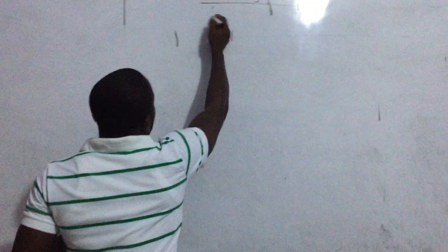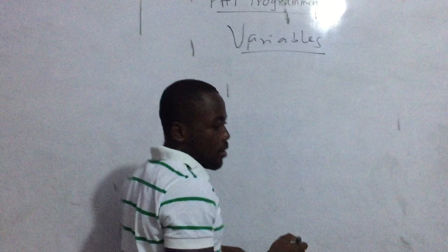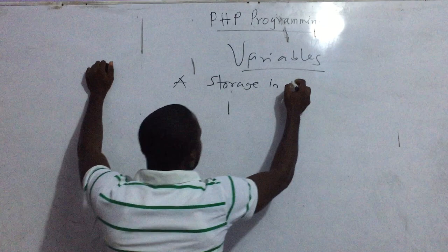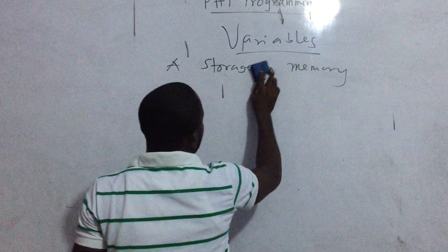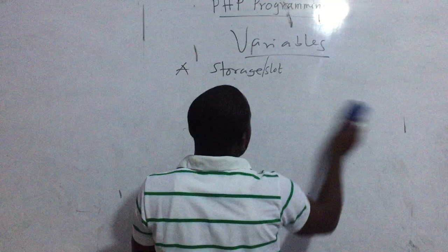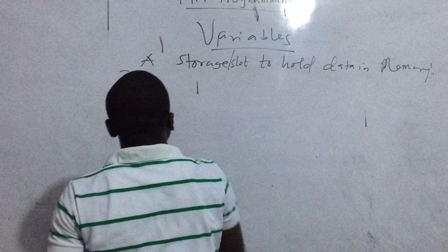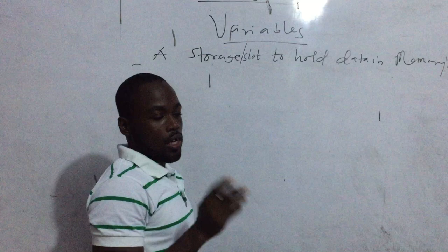What is a variable? A variable is a storage memory — a space or slot to hold data in memory. In PHP, variables are defined with a dollar sign. For the PHP interpreter to recognize something as a variable, the variable must start with a dollar sign.